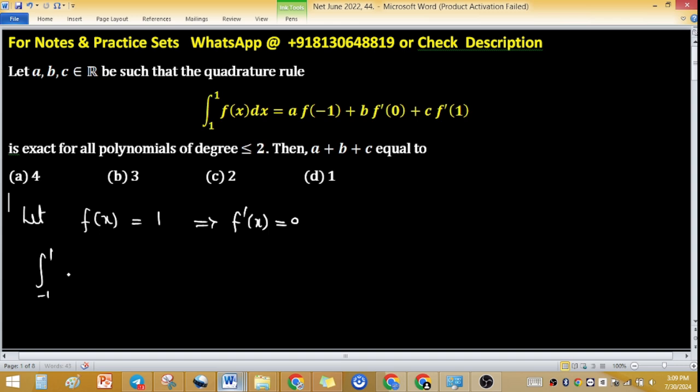dx, in place of f(x) put 1, equals A plus f(-1), f(-1) from this one will be 0. Sorry, it will be 1, plus f'(0), f'(0) is 0, plus C times f'(1).